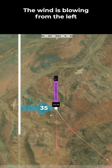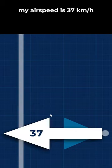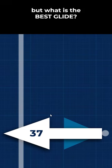The wind is coming in from the left. If I turn and fly into wind directly, my trim speed's 37 kilometers an hour. I can get past the road. But what's the best glide?